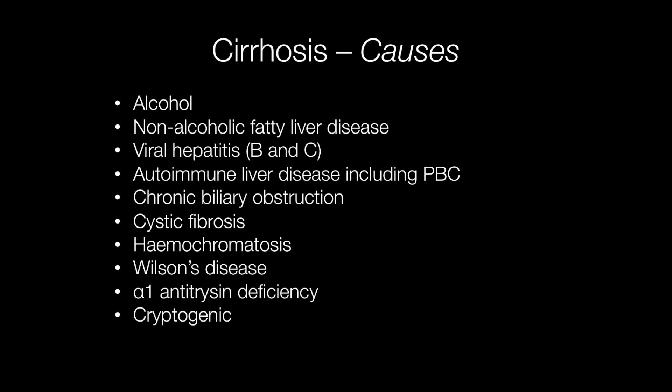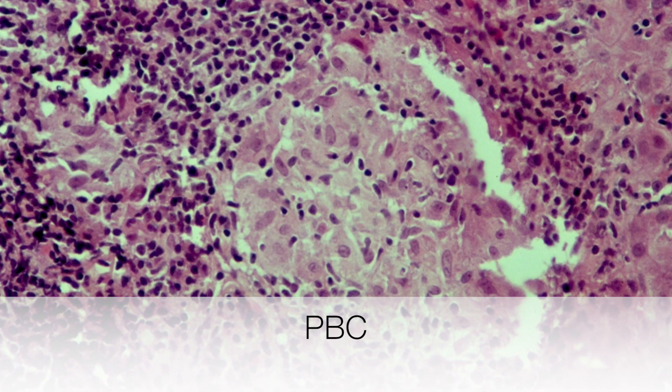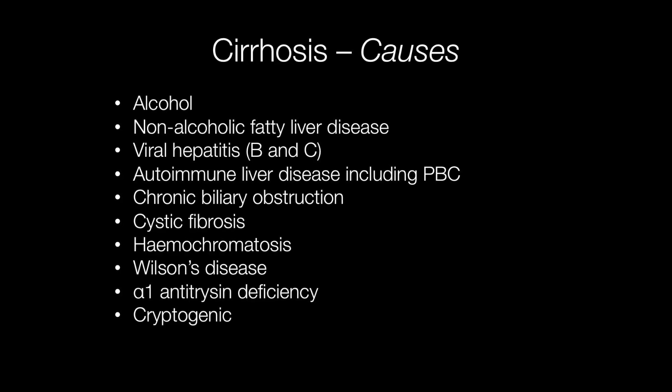Other predisposing conditions include autoimmune liver disease such as primary biliary cirrhosis, chronic biliary obstruction, cystic fibrosis, hemochromatosis, and Wilson's disease — both of which are treatable conditions. Additional causes include alpha-1 antitrypsin deficiency and cryptogenic cirrhosis. Around 10 to 15% of cases are cryptogenic, where no underlying cause can be identified.